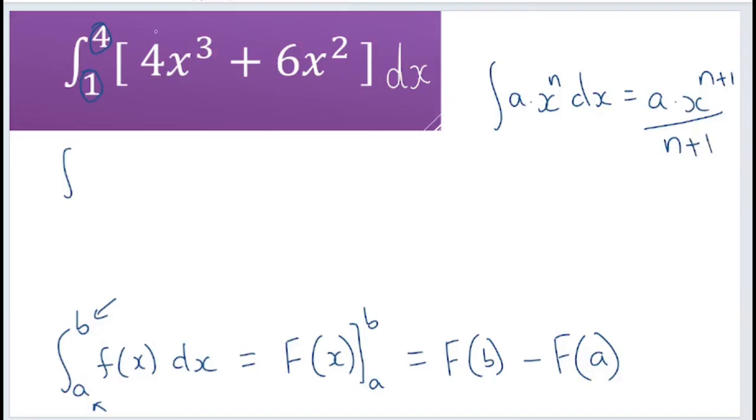So here when we're integrating 4x to the power of 3, that's going to become 4x to the power of 4 divided by 4, plus the integral of 6x squared will be 6x to the power of 3 divided by 3. Now this 4 and 4 will cancel and 6 divided by 3 gives us 2.